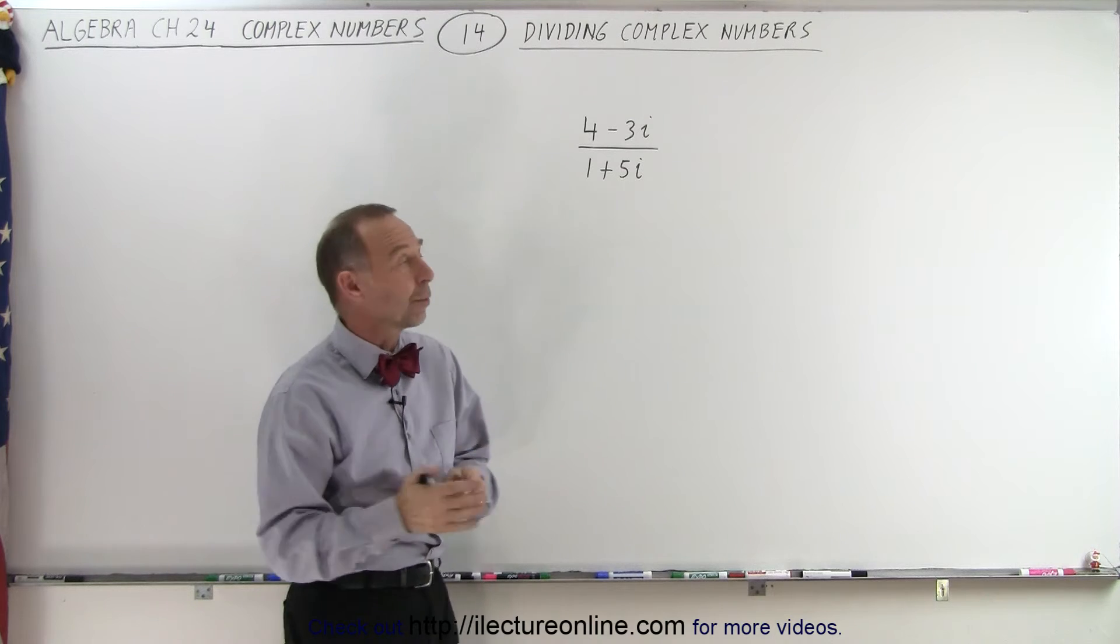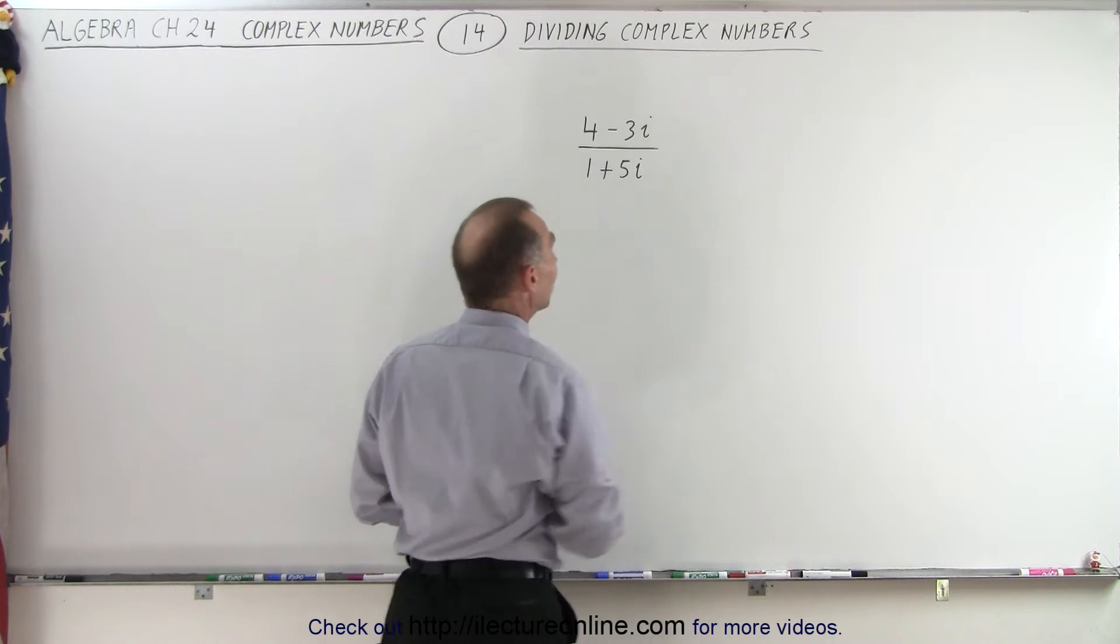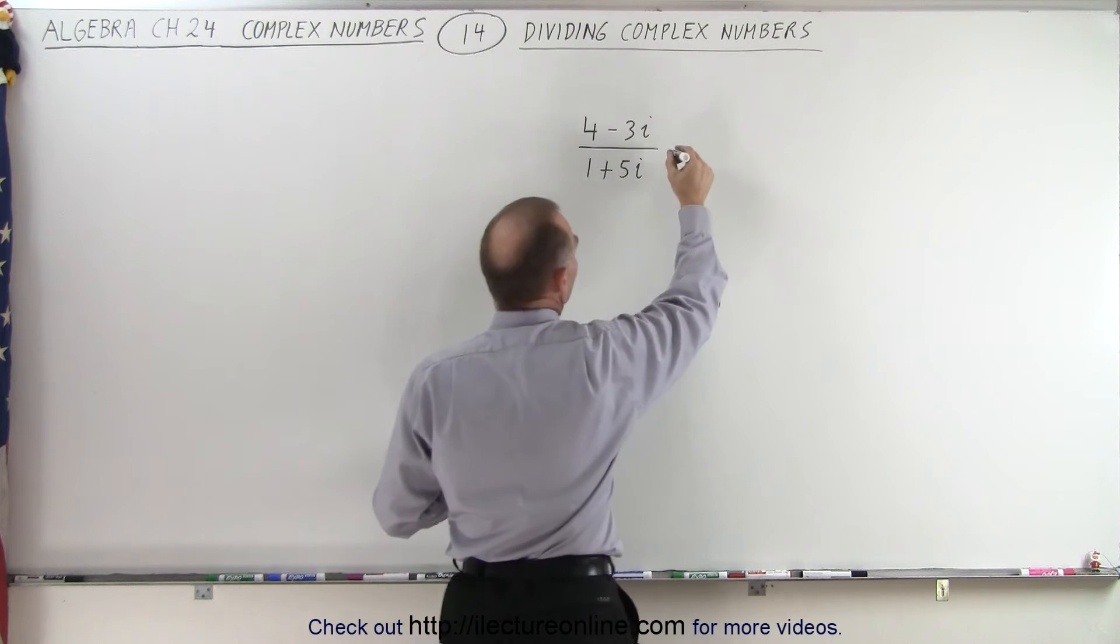The trick is that we're going to multiply the numerator and the denominator by the complex conjugate of the denominator. So it looks like it follows.